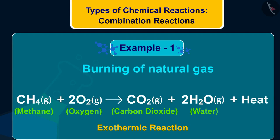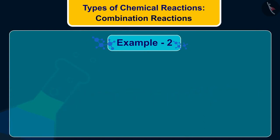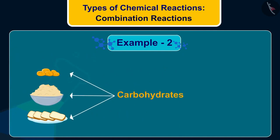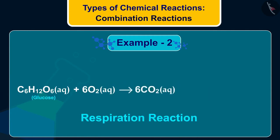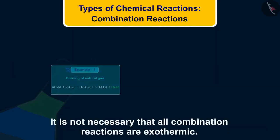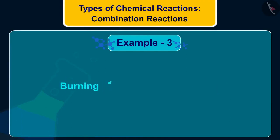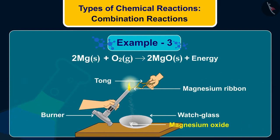Do you know the process of respiration is also an exothermic process? The food we consume, like potatoes, rice, bread, etc., contains carbohydrates. These carbohydrates are reduced to form glucose, which is further broken down to simple substances like carbon dioxide and water, releasing a large amount of energy. The decomposition of vegetable matter into compost is also an example of exothermic reaction. However, it is not necessary that all combination reactions are exothermic. One more example of a combination reaction is burning of magnesium ribbon — magnesium burns in oxygen to produce magnesium oxide.